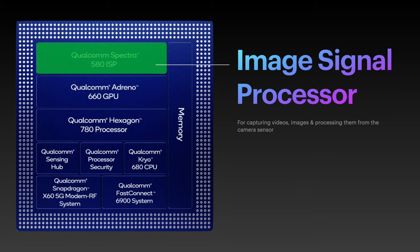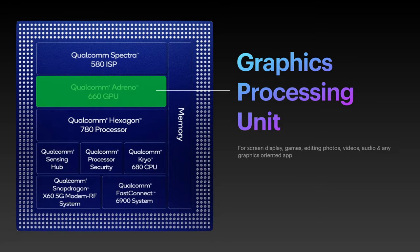If you are browsing the web, the prime processor is not really used; instead, the efficiency cores handle it, consuming less battery. If you are gaming, the prime processor kicks in to give higher performance. The next part is the ISP, or Image Signal Processor, which processes all data from your camera sensor to make your pictures look great — for example, enabling night mode photos that come out brighter in milliseconds. The third part is the GPU, which manages display resolution, gaming, and encoding and decoding videos along with other graphics-intensive tasks.